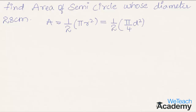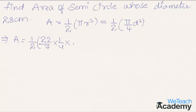Now substituting the value of diameter in the formula, we get: area = 1/2 × (22/7) × (1/4) × d², where d² is 28 × 28.